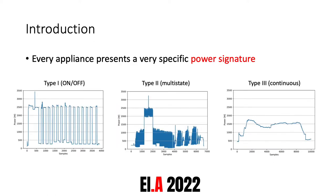Every appliance presents a very specific power signature that allows us to distinguish between them. In particular, researchers found that there are three main types of appliance signatures. Type 1 is characterized by only two states — on and off. Type 2 appliances, also called multi-state, present more than two states and can be modeled by finite state machines. Finally, type 3 appliances are characterized by a continuous power signature and are the most difficult to recognize, because the power signal is very variable.